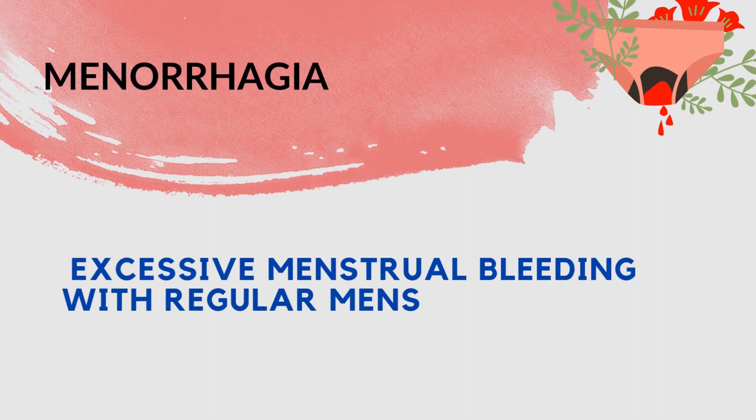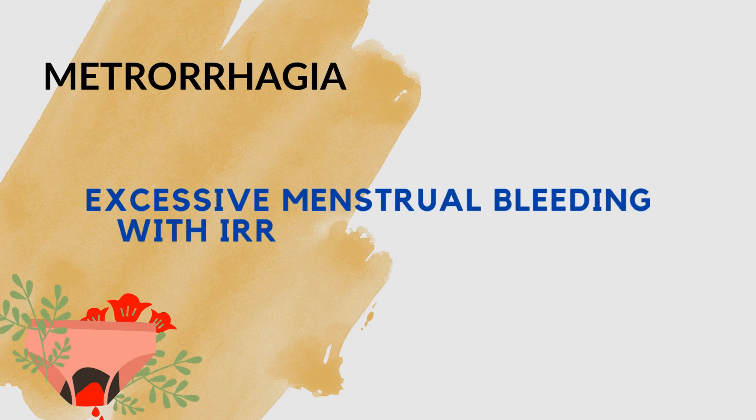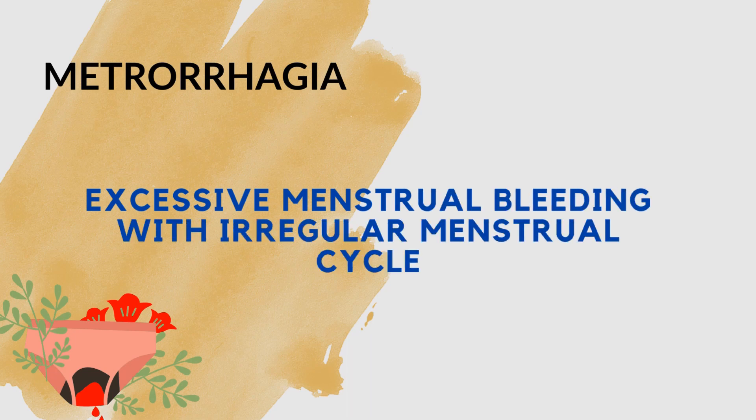Let us get familiar with the terminologies related to menstruation. Menorrhagia is excessive menstrual bleeding with regular menstrual cycles. Metrorrhagia is excessive menstrual bleeding with irregular menstrual cycles. So to remember: menorrhagia involves regular cycles, whereas metrorrhagia involves irregular cycles.